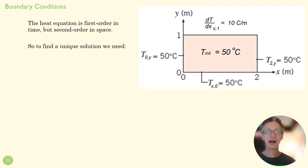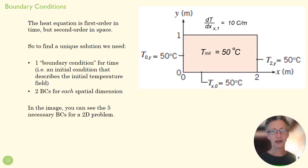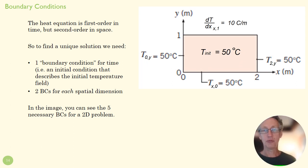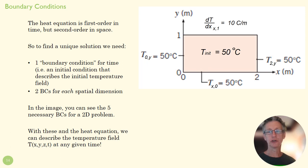The heat equation is first order in time but second order in space. A first-order equation needs one BC; a second-order needs two. So for a unique solution, we need one boundary condition for time and two boundary conditions for each spatial dimension. In the 2D problem shown here, we have three temperature boundaries, one flux boundary, and one initial condition at time equals zero defining all points in the temperature field — that's five boundary conditions for our 2D problem. A 3D problem would need seven boundary conditions. Once we have those, the heat equation gives us a unique solution for the whole field over the entire simulation time.